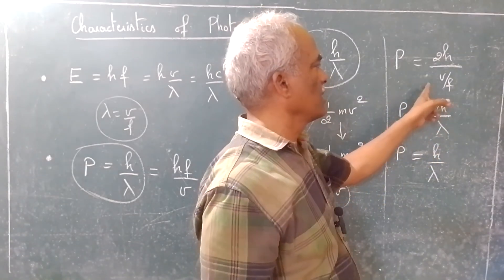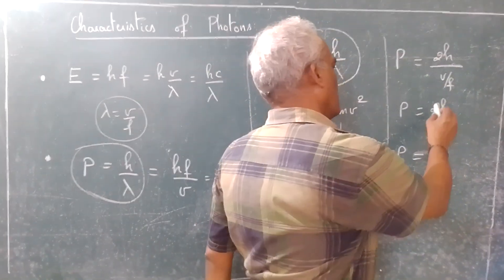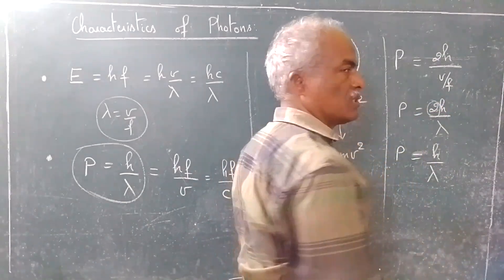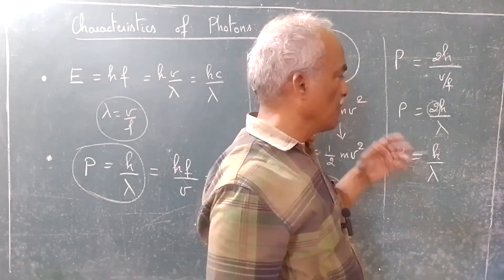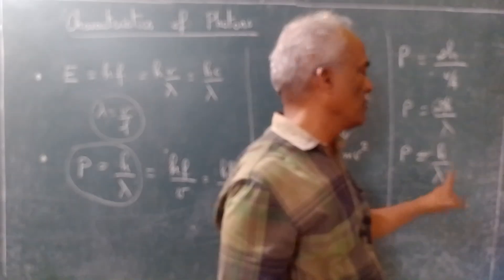Now, we know that lambda equals v by f. So, 2h by lambda. Forget about this 2, which is a constant. We can write linear momentum as equal to h by lambda.